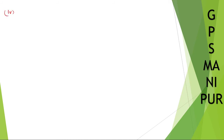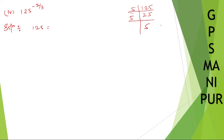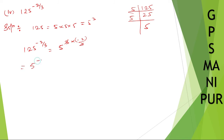Roman number 4: find the value of 125 to the power minus 2 by 3. Solution: 125 can be written as 5 into 5 into 5, which is 5 cube. So 125 to the power minus 2 by 3 is 5 cube, raised to minus 2 by 3. The 3s cancel, leaving 5 to the power minus 2. Because of the minus, we write 1 by 5 square, which is 1 by 25. So 1 by 25 is your answer.